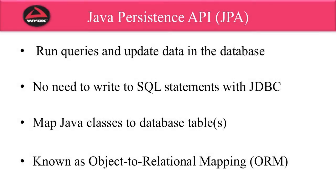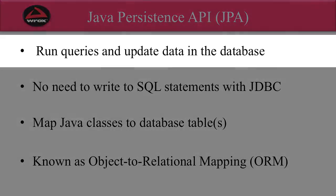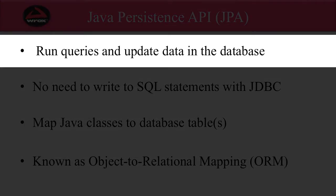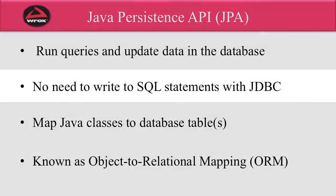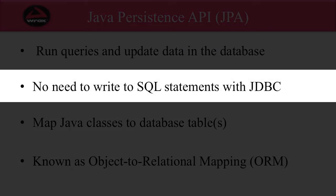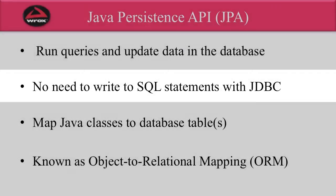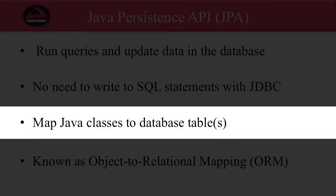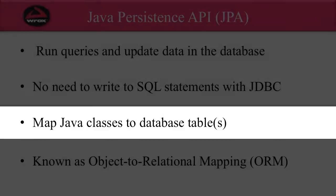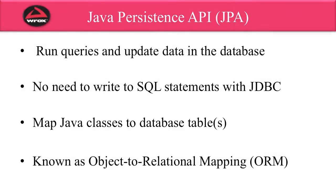The Java Persistence API allows you to run queries and update data in the database. One thing to note is that there's no need to write SQL statements with JDBC. Instead, what you do is you map Java classes to database tables. This is known as object-to-relational mapping.